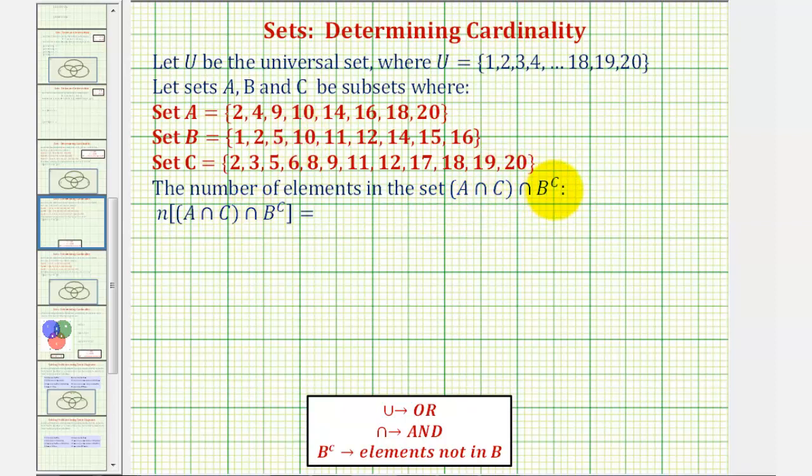We just solved a similar problem using a Venn diagram. Let's see if you can answer this question just by analyzing sets A, B, and C. We'll first determine the set A intersect C intersect B complement, then determine how many elements are in that set. The number of elements in a set is also called the cardinality of a set.